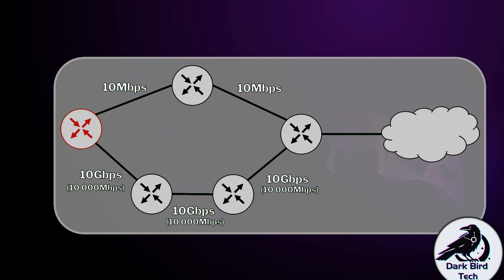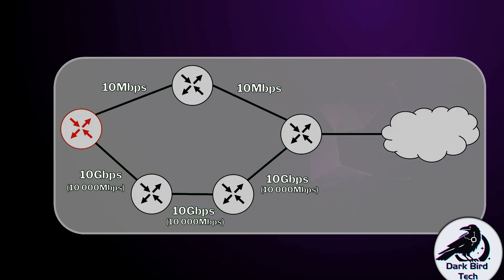Let's see what RIP would do on an example network. Starting on the red router, trying to reach the destination network. There's a top pathway with two router hops at 10 megabits per second, or a bottom pathway with three hops at 10 gigabits per second. RIP cares only about hop count and doesn't see speed, so RIP is going to choose the top pathway — meaning traffic goes via the 10 megabit per second path, not the 10 gigabit per second path.